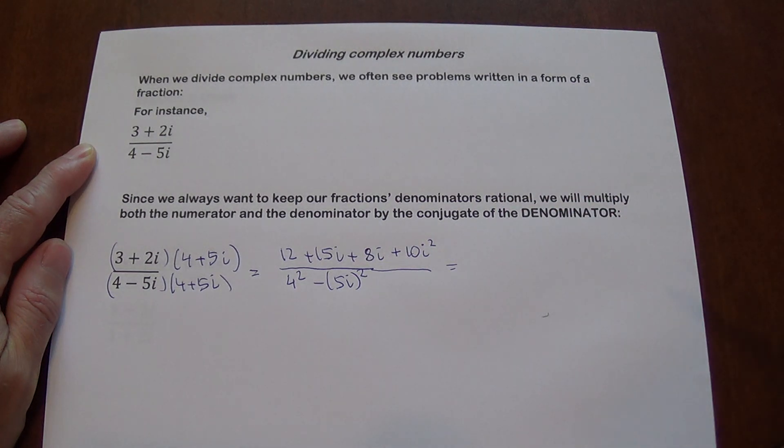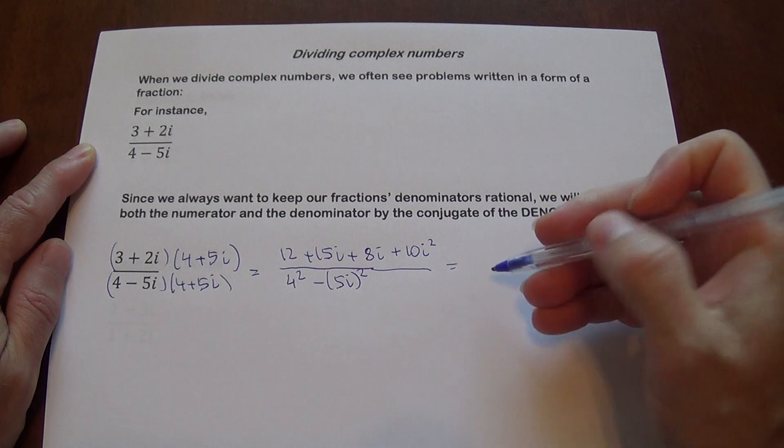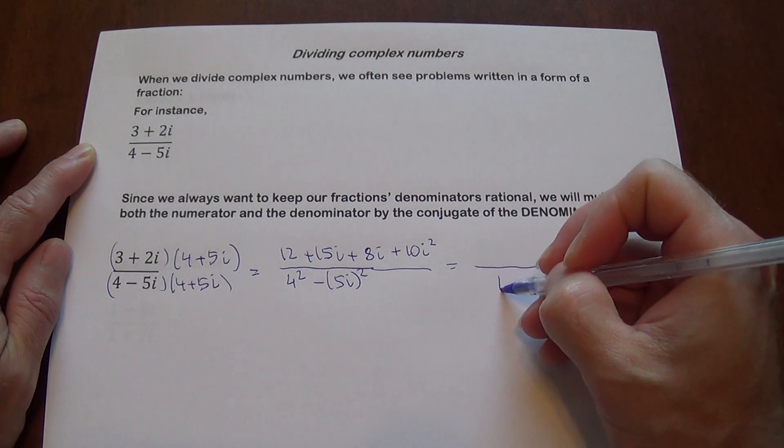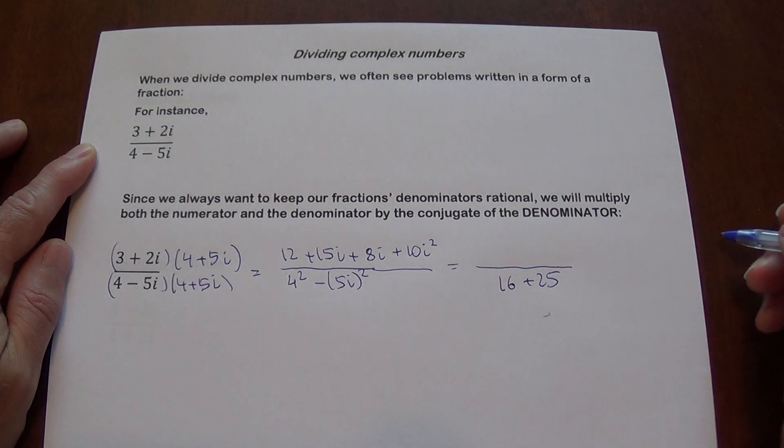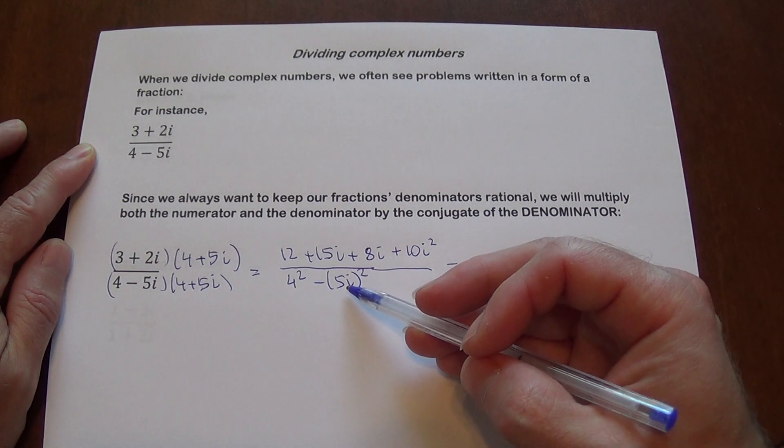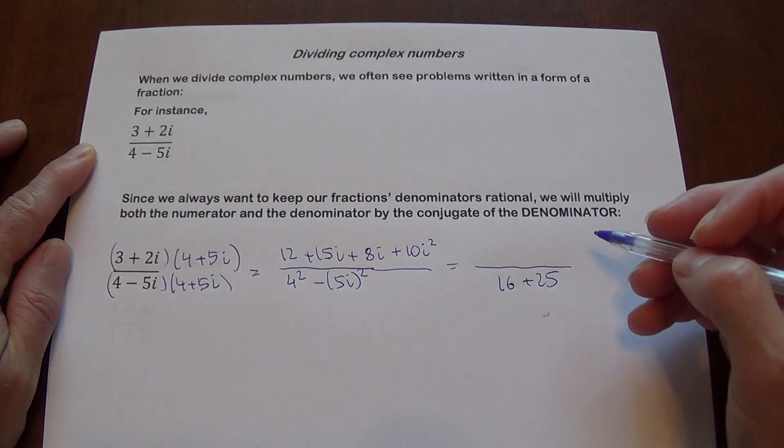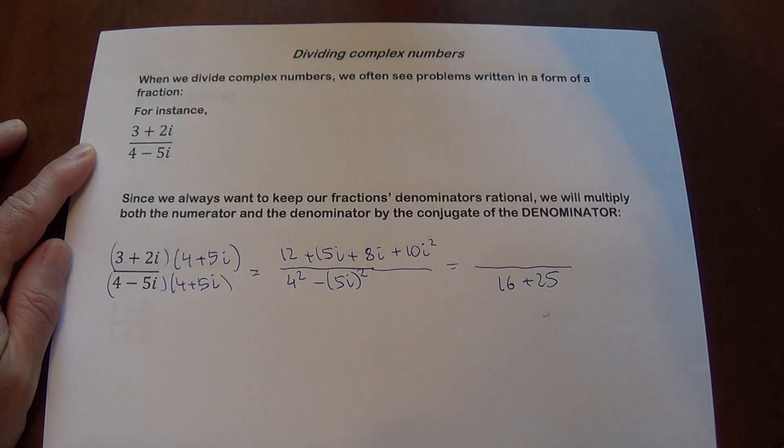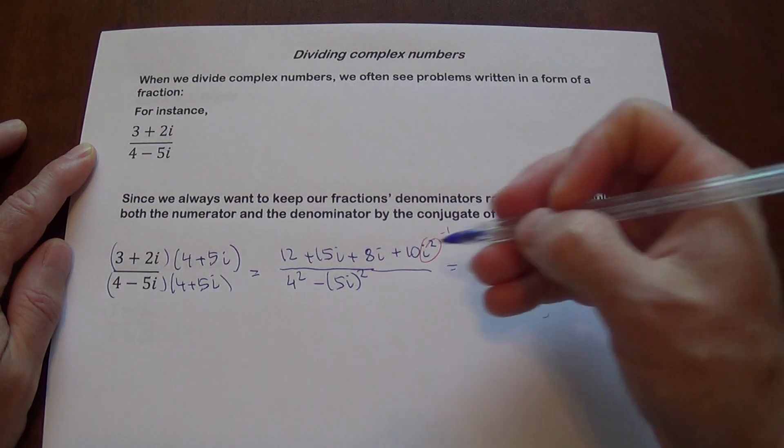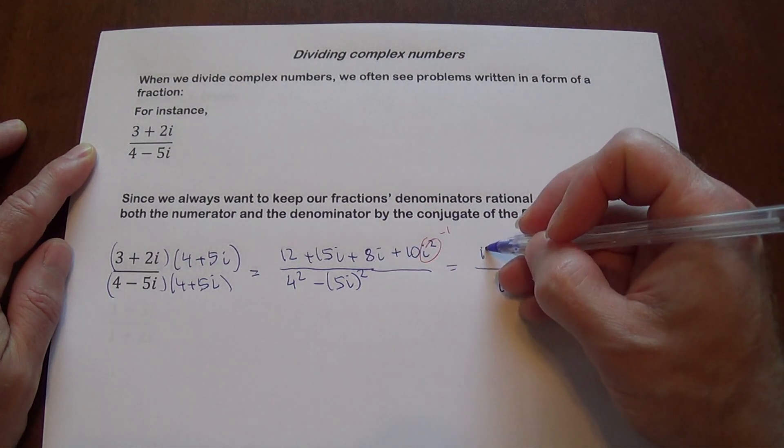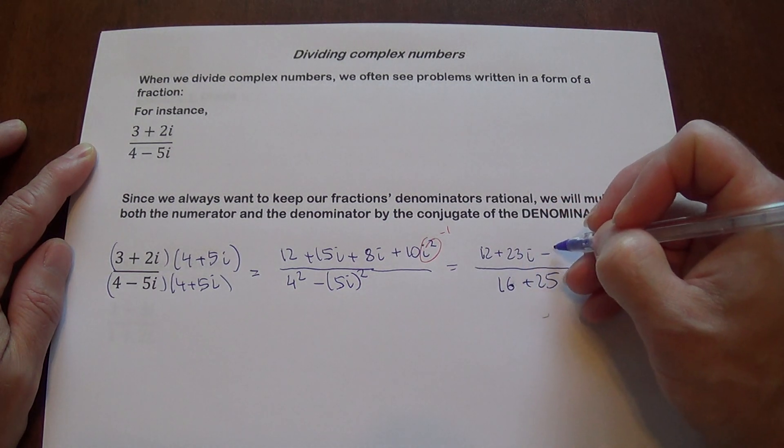So if you understand the basic work with that, the bottom is going to give us 16 plus 25, because 5i squared will give you 25i squared and i squared is negative 1. The numerator, we simplify this, we are also going to get negative 1 here.